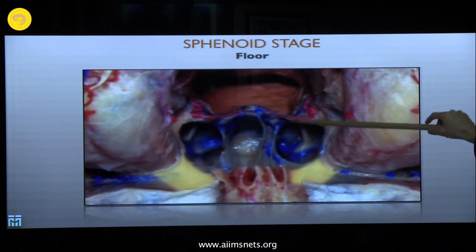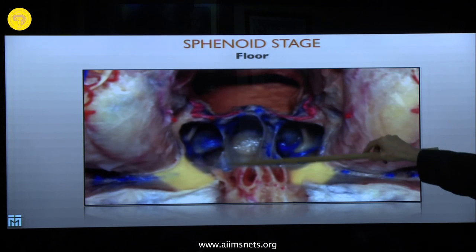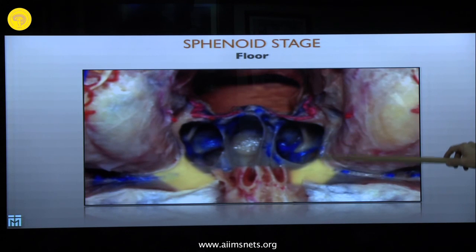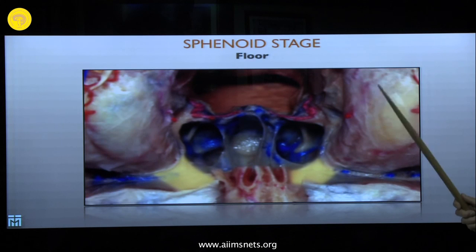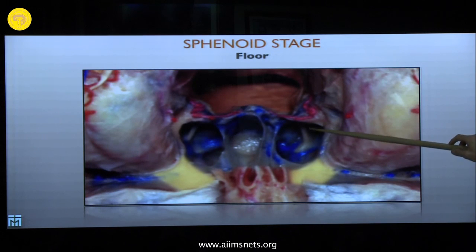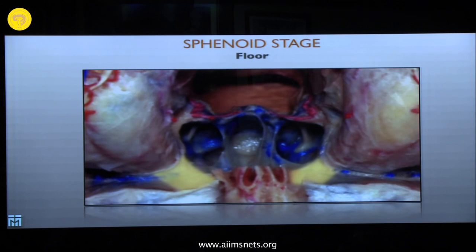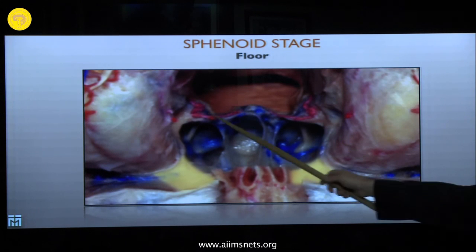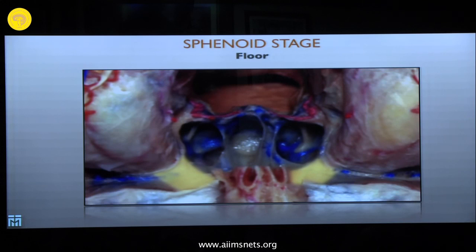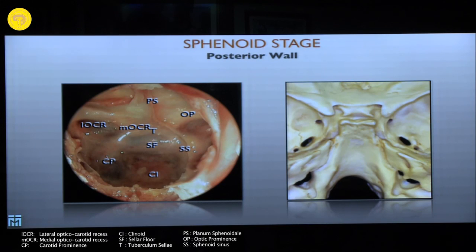Looking at the floor of the sphenoid sinus, you see the anterior wall and some septae. In a well-pneumatized sphenoid sinus you can see elevations on the floor — these are the elevations of the vidian canal. The vidian canal runs into and sometimes above the floor of the sphenoid sinus, running to the genu of the carotid artery at the level of the foramen lacerum. The most important structure for us is the posterior wall of the sphenoid sinus.